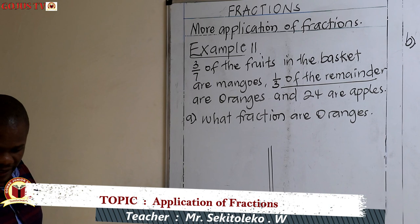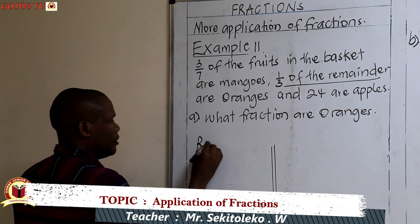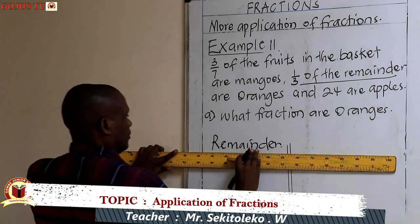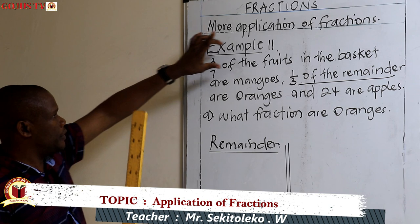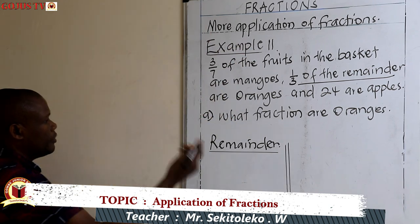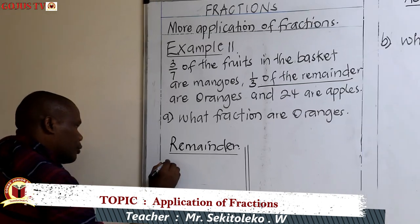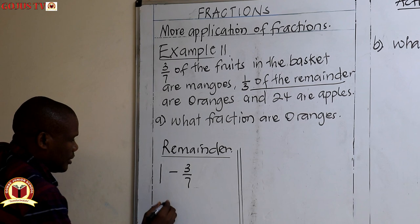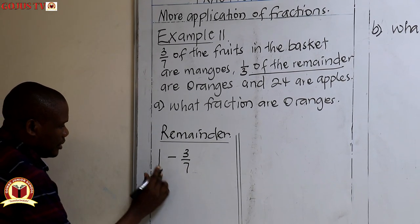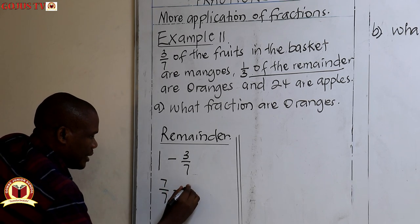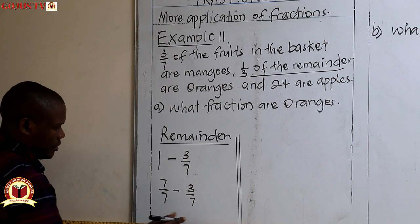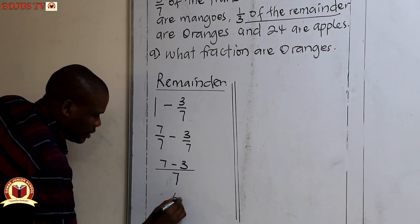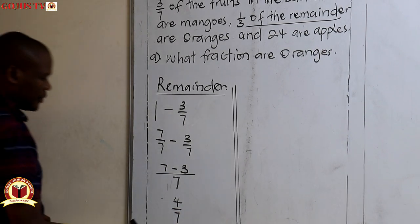Since one-third of the remainder are oranges, we first need to find the remainder. If three-sevenths of the fruits are mangoes, then what remains in terms of fractions is one minus three-sevenths. Taking denominator seven, one whole is seven-sevenths minus three-sevenths. The common denominator is seven, and seven minus three gives four — so the remainder is four out of seven.